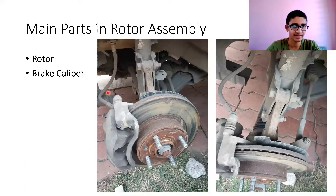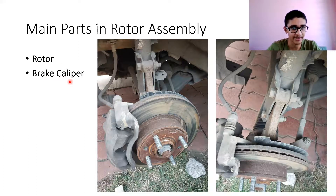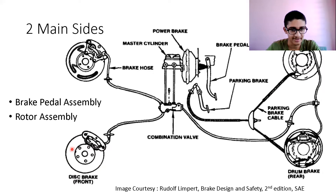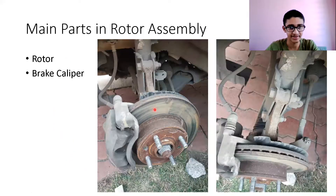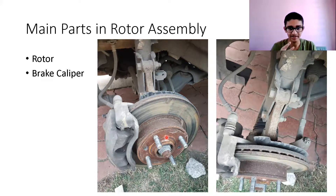Now let's come to the rotor assembly side. We know how pressure is generated using the driver's force and transferred to the brake lines. The two major parts in the rotor assembly are the rotor and the brake caliper. The rotor is the brake disc shown earlier. These images are from a Hyundai i10 — my own vehicle. The brake disc is mounted on a hub, and the hub rotates with the wheel, which is attached by four lug nuts.